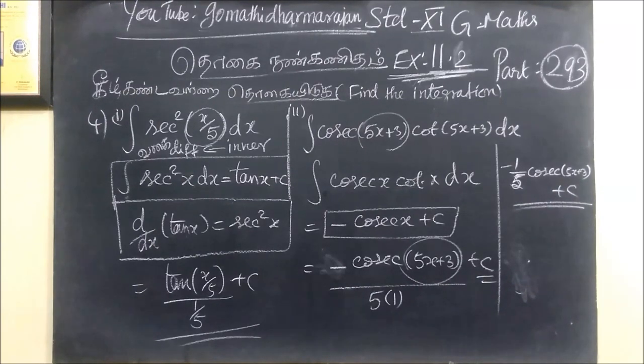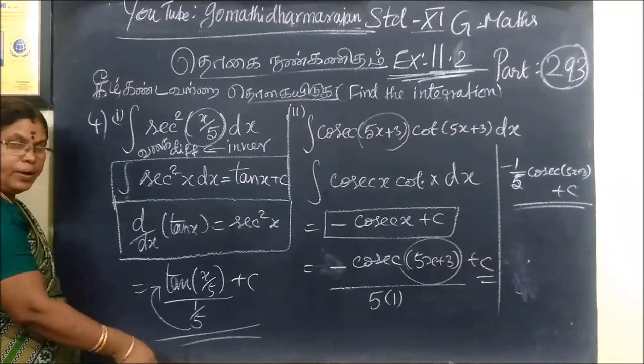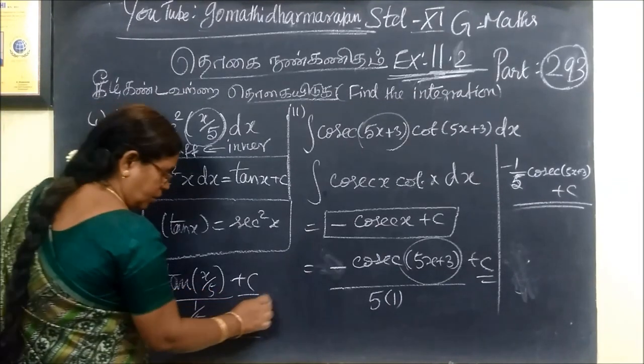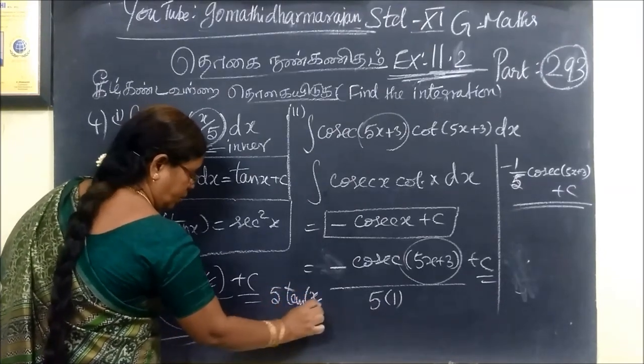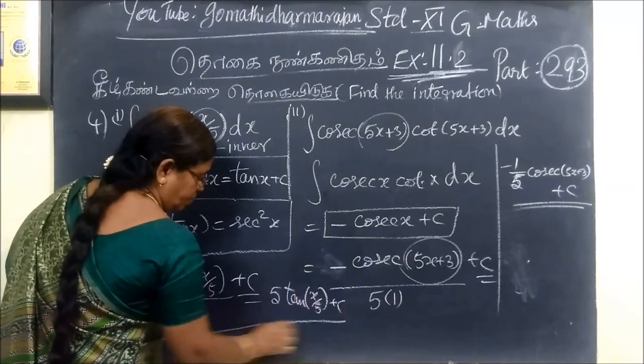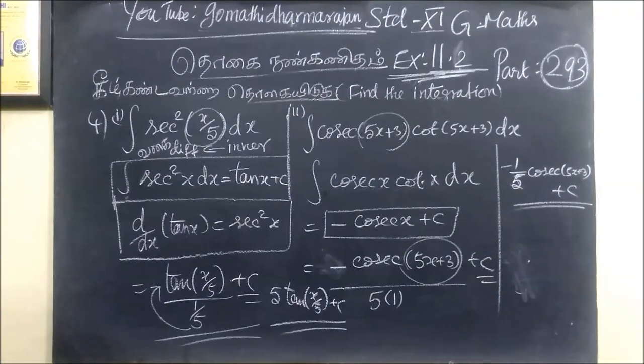Fourth is first sum. First sum is 5 into tan of x by 5. This is the answer. The denominator will go to the numerator, so 5 into tan of x by 5 plus C. And, the second question.